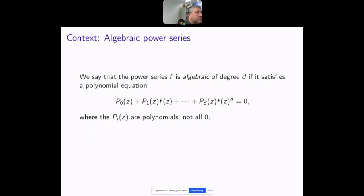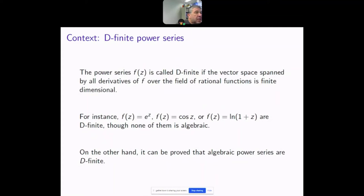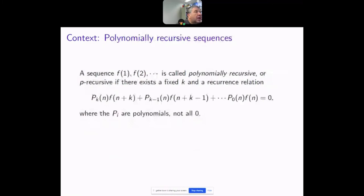The two other classes are: algebraic generating functions, those satisfying a polynomial algebraic equation; and D-finite power series, where the vector space spanned by all the derivatives is finite-dimensional. Everything algebraic is D-finite, and a power series is D-finite if and only if its coefficients satisfy a linear recurrence relation with polynomial coefficients — whereas for rational generating functions those polynomials were constants.